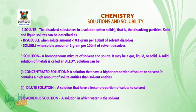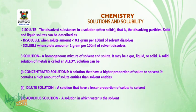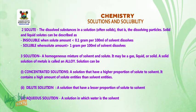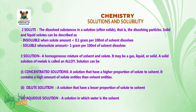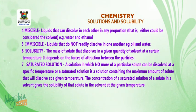Number three: solution — this is a homogeneous mixture of solvent and solutes. It may be a gas, liquid, or solid. A solid solution of metals is called an alloy. Solutions can be: one, concentrated — a solution that has a higher proportion of solute to solvent, containing a high amount of solute; two, dilute — a solution that has a lesser proportion of solute to solvent; and three, aqueous — a solution in which water is the solvent.